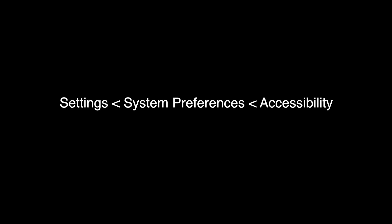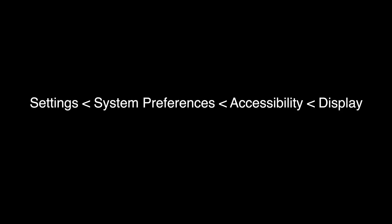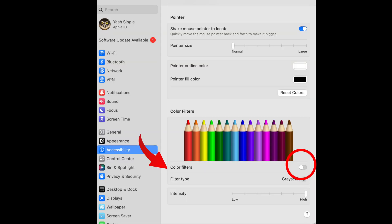Fix number 7: Disable automatic brightness. Doing this also solves such issues. Fix number 8: Enable color filters. To do so, go to Settings, then open System Preferences, then open Accessibility, then click on Display and then click on 'Enable Color Filters.'